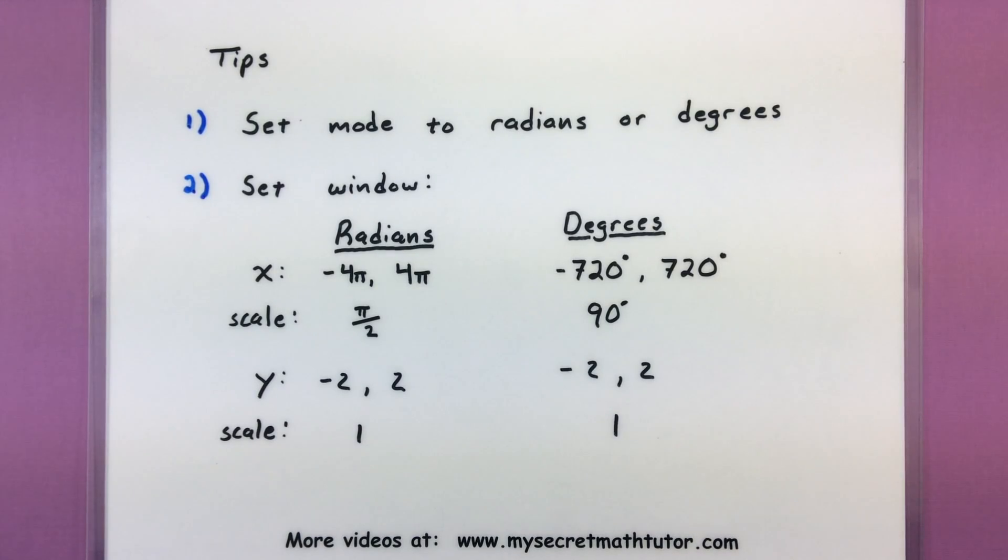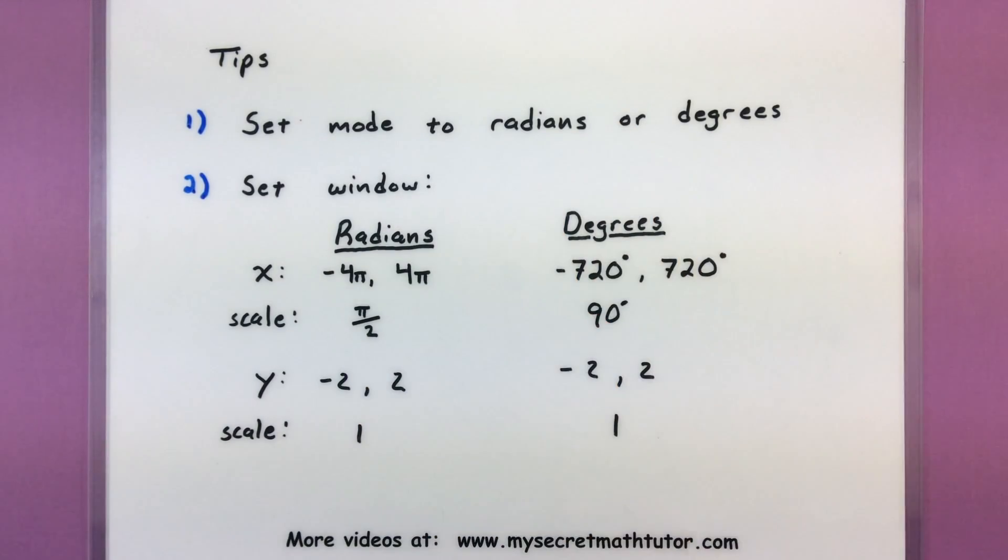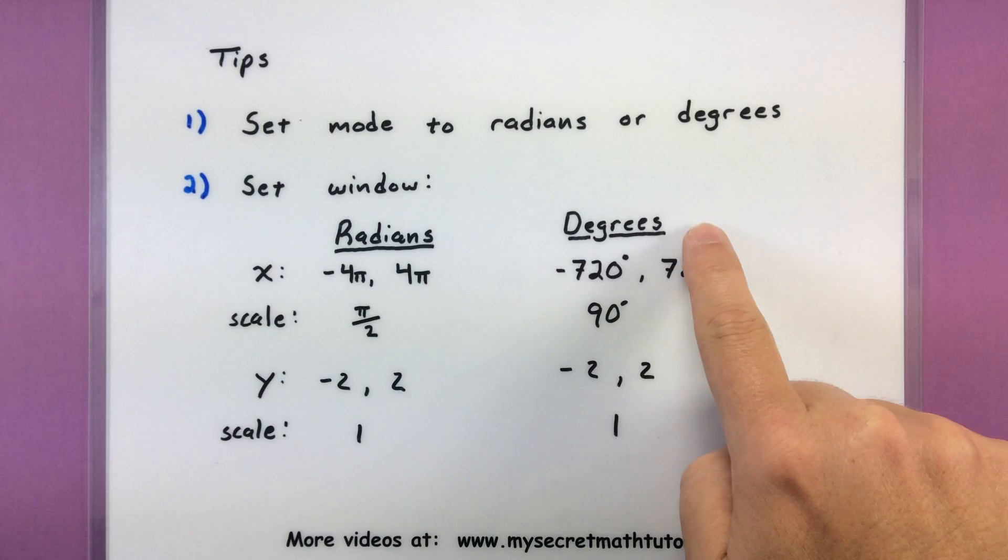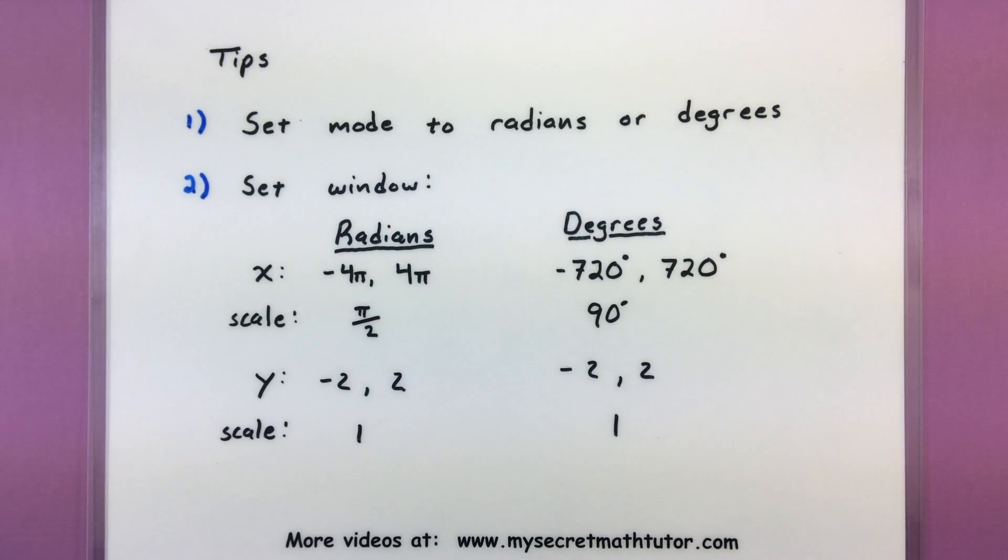First of all, it's important to know if you are using one of these trigonometric functions whether you want to be in radians or in degrees. It makes a huge difference when we start setting up our window and what the picture will look like. Usually you can figure that out from context, and most of the time I like to stick with radians, but it is important.